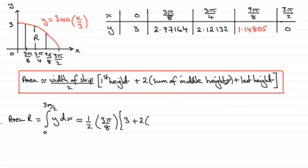So the first height here of the middle heights, that's that one, then we get that one and then we get that one. The first one of the middle heights is this one here, 2.77164, so 2.77164, then we add it to the next height 2.12132.